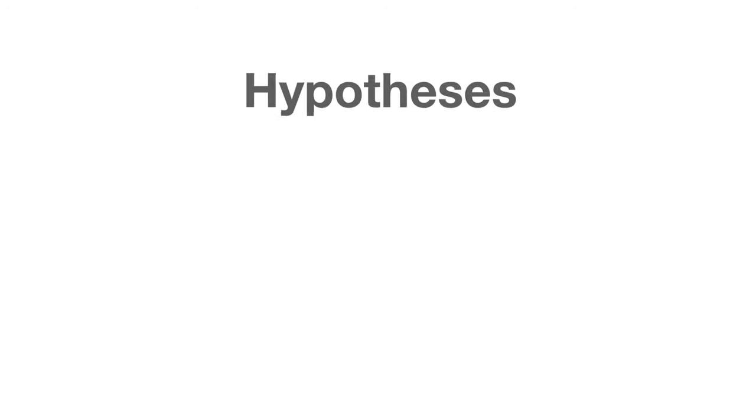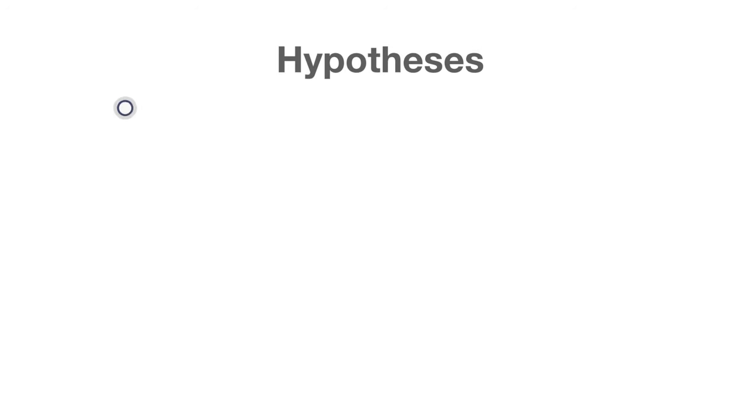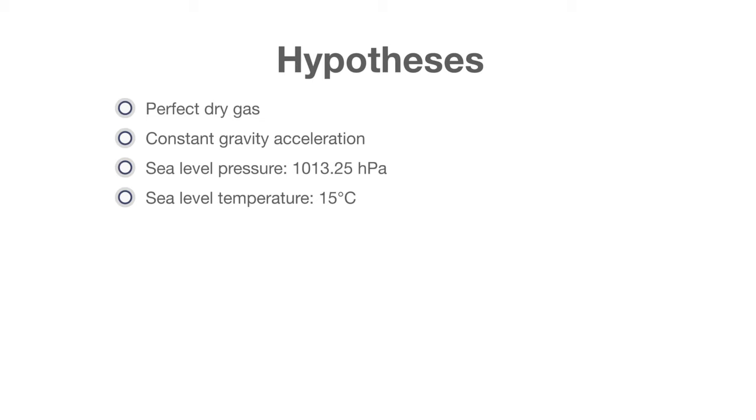The first hypothesis defines the composition and nature of air being a perfect gas. The second one assumes gravity does not change with altitude. The third one is about the surface condition at sea level. The air pressure and temperature are assumed to be the same everywhere in the world. The last one defines the vertical temperature profile.